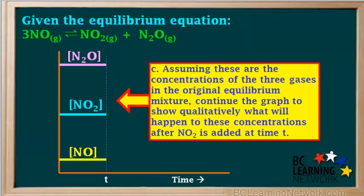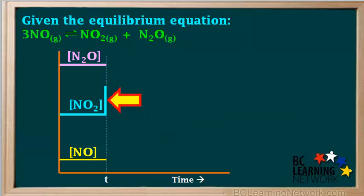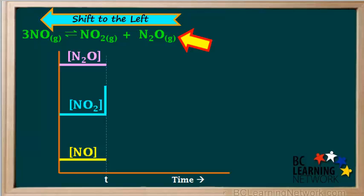Here's question C: assuming the graph shows the concentrations of the three gases in the original equilibrium mixture, continue the graph showing qualitatively what will happen to these concentrations after NO₂ is added at time T. We start by showing a rapid increase in the concentration of NO₂ at time T by adding a vertical line on the graph for NO₂. Nothing was done initially to the concentrations of the other two gases. The stress of increasing the concentration of NO₂ causes the equilibrium to start shifting to the left in order to use up some of the added NO₂ and counteract the stress.